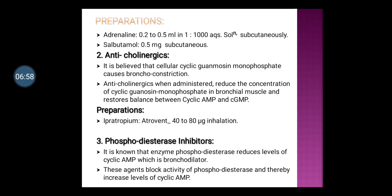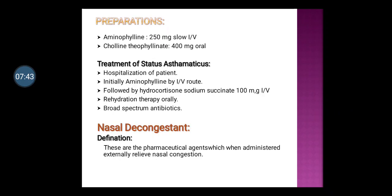Dose of ipratropium is 40 to 80 micrograms by inhalation route. Third is phosphodiesterase inhibitors. The enzyme phosphodiesterase reduces levels of cyclic AMP, which is a bronchodilator. These agents block the activity of phosphodiesterase and thereby increase the level of cyclic AMP. Preparations: aminophylline 250 mg slow IV; choline theophyllinate 400 mg by oral route.